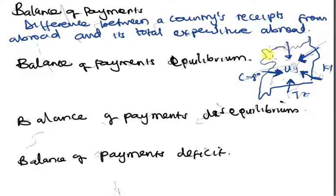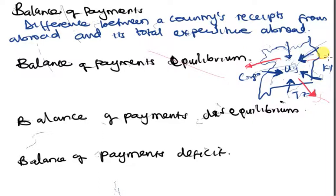We also spend abroad — we buy many goods from abroad, which means we are taking money outside. If you go to Congo to tour, or to Tanzania's coast to buy gifts, you are moving money out of Uganda. If our ministers go to Kenya for a conference and spend money there, that is also total expenditure abroad.